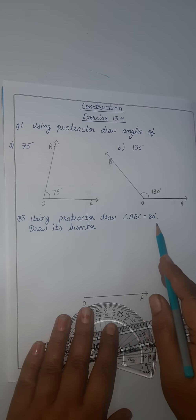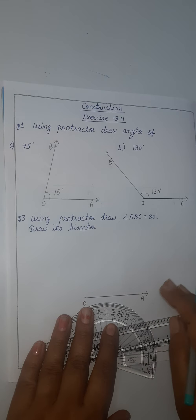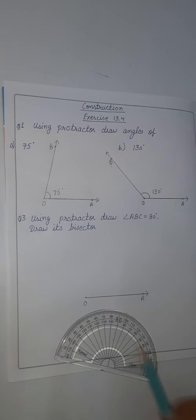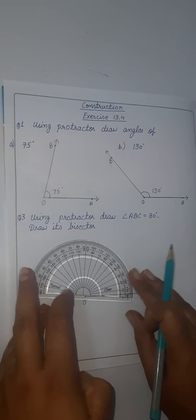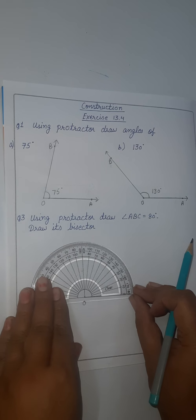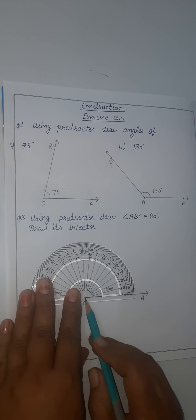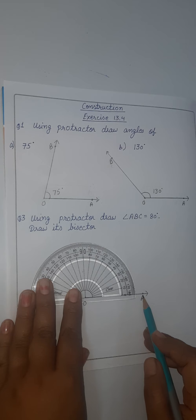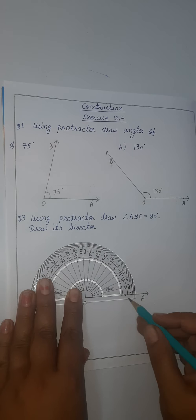The third question: using the protractor, draw angle ABC equal to 80 degrees and draw its bisector. We have to draw an angle bisector. First I have already drawn a ray OA. I will place the protractor with midpoint at O and the 0-180 degree line coinciding with OA. Since 0 is here, I take the inner reading and measure 80 degrees. Let's mark the point.